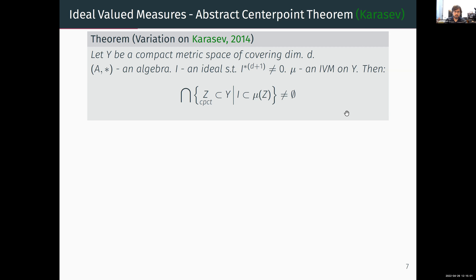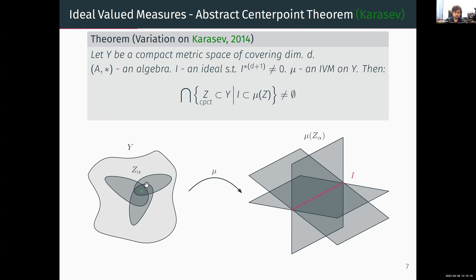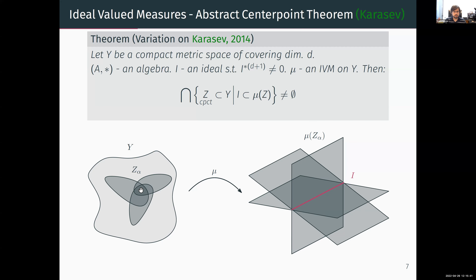If I have such an ideal, it allows me to define some notion of scale of sets: a set is very large if its measure contains this ideal. The theorem says those sets are so large that the entire collection must share a common point. The proof is by contradiction: assume the intersection is empty. Then the collection of complements is an open cover of Y. By the Palais lemma, every covering has a refinement that can be colored in d+1 colors such that every color is a disjoint union of sets.